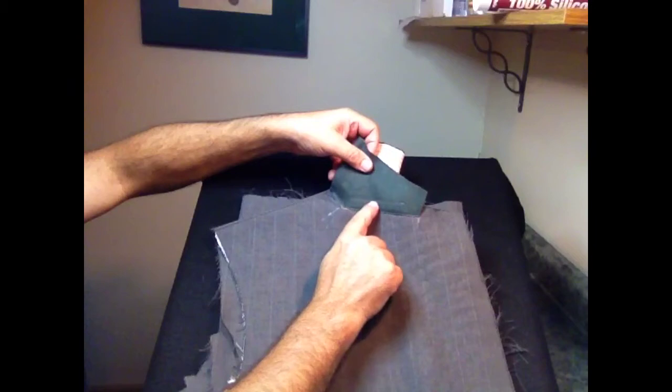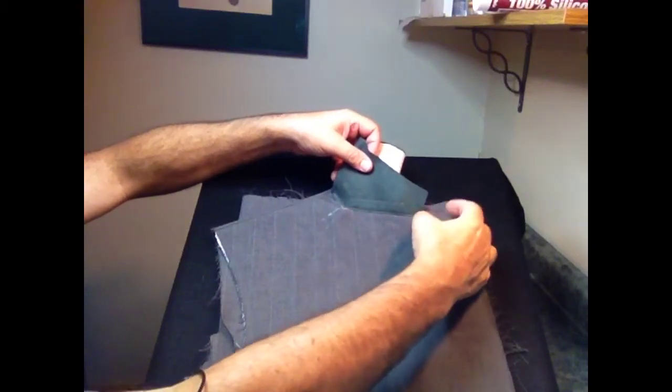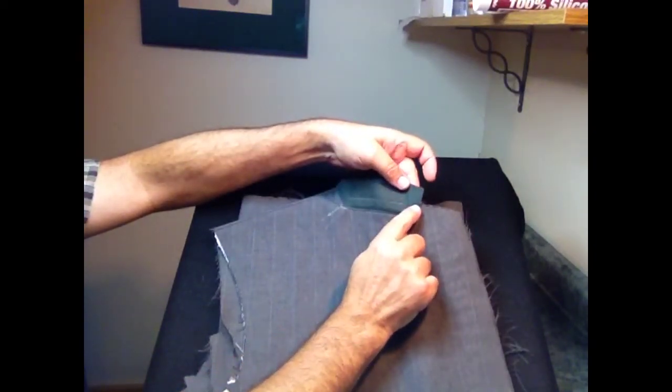You'll notice that with this line of stitching I stop about one inch short of the front edge of this under collar.